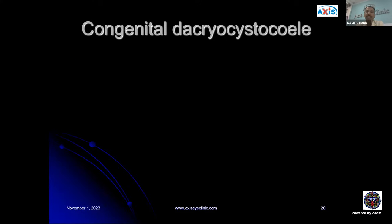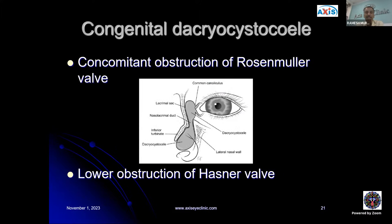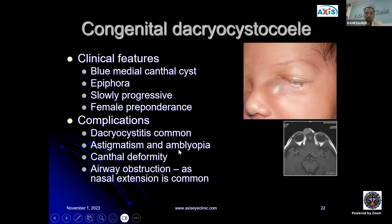The next condition is congenital dacryocystocele, which occurs especially in newborns due to concomitant obstruction of the valve of Rosenmuller and the valve of Hasner — creating a large cystic swelling. Clinical features include a bluish medial canthal cyst, watering, and slow progression, occurring more in girls. Complications include infection, dacryocystitis, astigmatism, amblyopia, canthal deformities, and life-threatening airway obstruction due to nasal extension.